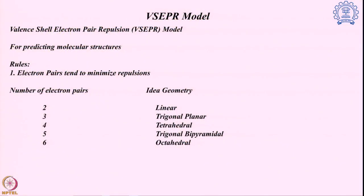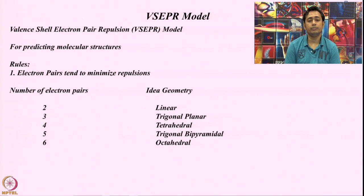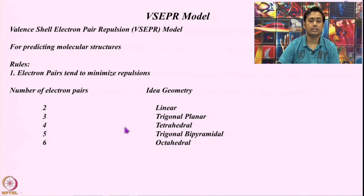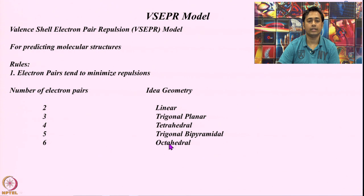Depending on the number of electron pairs, this is the ideal geometry we can expect. If only two electron pairs are present, it should prefer a linear geometry. Three electron pairs gives a trigonal planar geometry. Four electron pairs gives a tetrahedral geometry. Five electron pairs gives a trigonal bipyramidal structure, and six electron pairs gives an octahedral geometry.